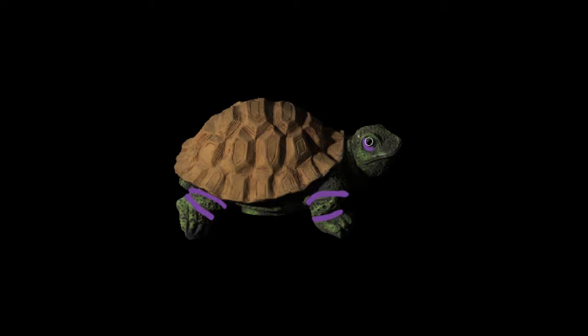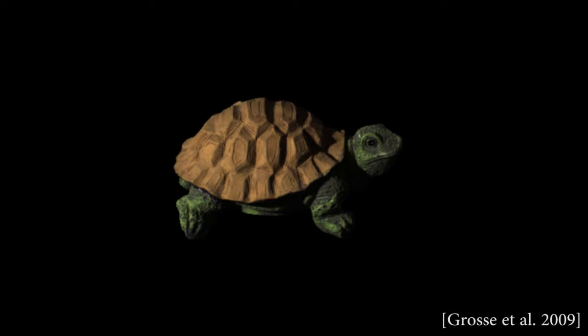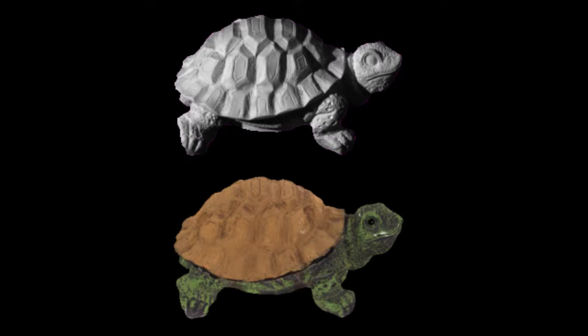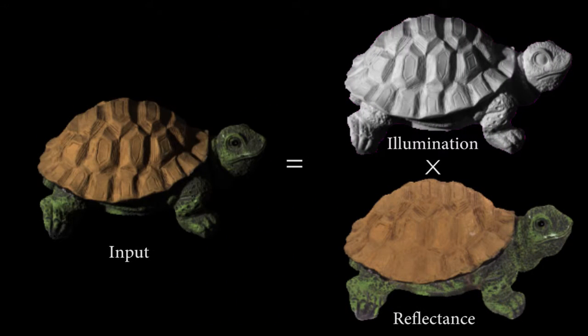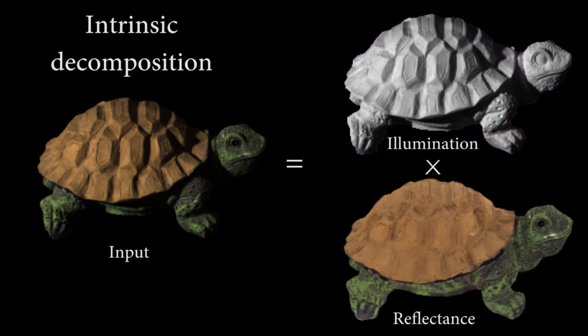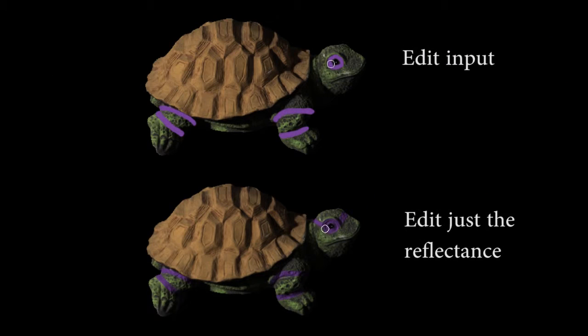When editing images and videos, manipulating colours and textures without considering the illumination produces unconvincing results. Decomposing the imagery into a product of two images, one for reflectance and one for illumination, is called intrinsic decomposition and it allows us to edit the real surface colour and then reapply the illumination for better results.